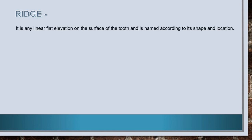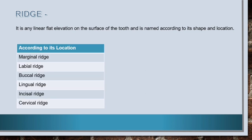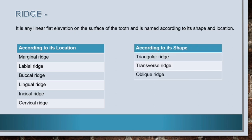Now let's know about ridge. A ridge is any linear flat elevation on the surface of the tooth and is named according to its shape and location. According to its location it can be named as marginal, labial, buccal, lingual, incisal or cervical ridge. Whereas according to its shape it can be named triangular, transverse or oblique ridge. Now let's know about each one of them in detail.